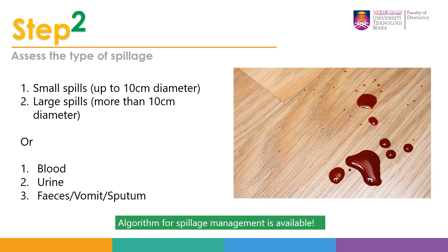Step number two, assess the type of spillage. If it is a small spill, it is considered 10 cm in diameter. If it is a large spill, it is considered more than 10 cm in diameter. If it is clustered, we consider it as large spillage. Please also assess the type of spillage — whether it is blood, urine, feces, or vomit — because the management will differ based on these three types of body fluids.